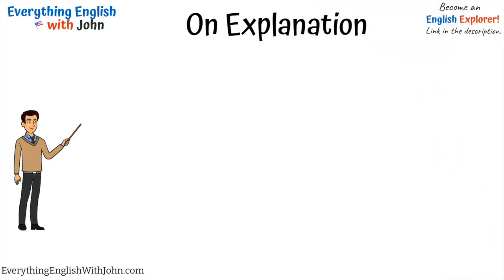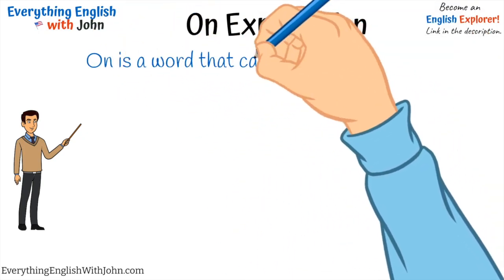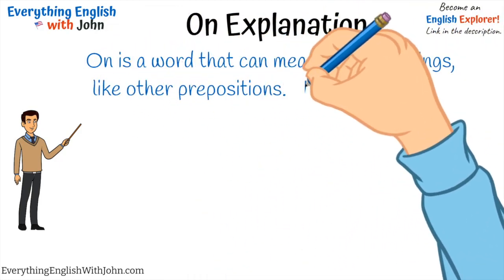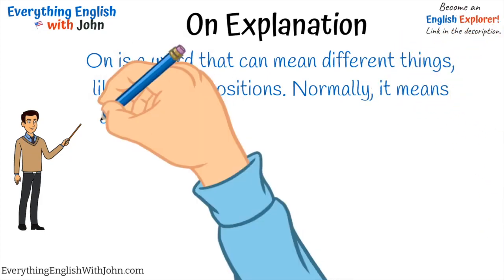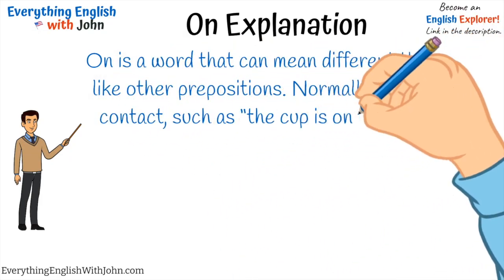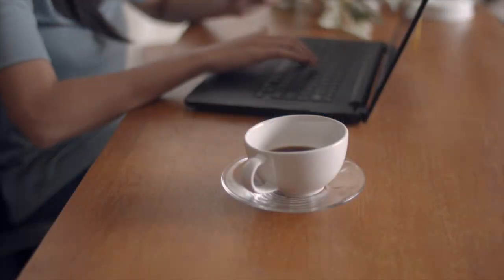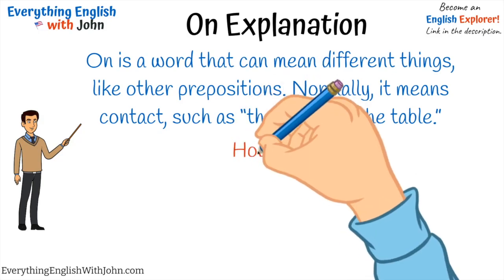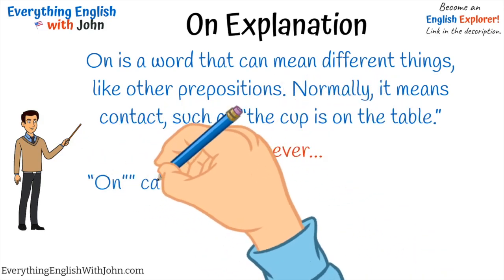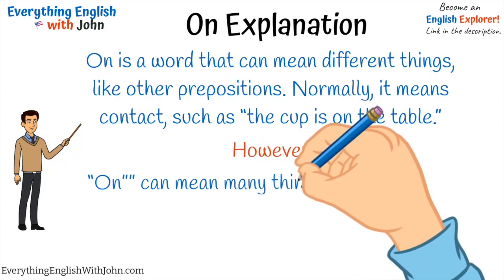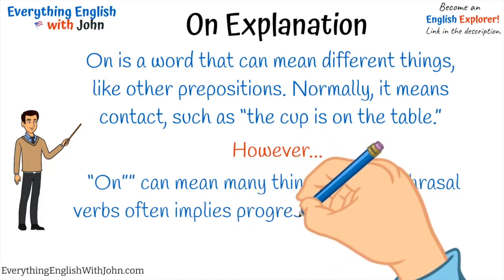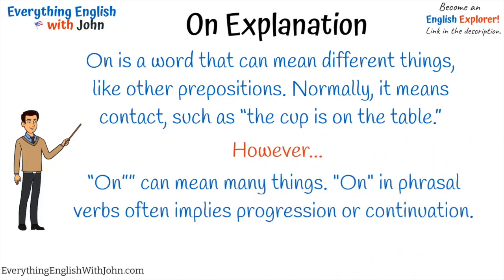On explanation. On is a word that can mean different things, like other prepositions. Normally it means contact, such as: the cup is on the table. However, on can mean many things. In phrasal verbs, on often implies progression or continuation.